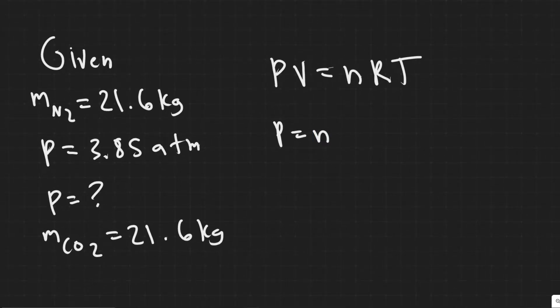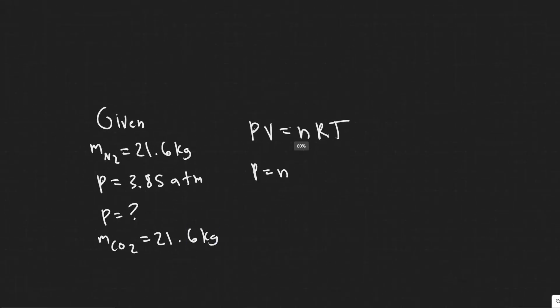But first, what we need to do is find the number of moles of CO2 and N2. Even though they have the same mass, they're going to have a different number of moles because the molar mass, which is basically just a conversion factor between grams to moles, is different.